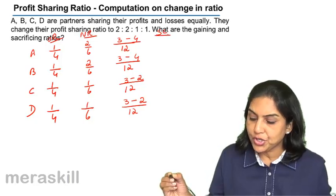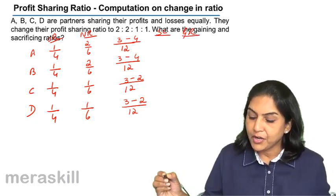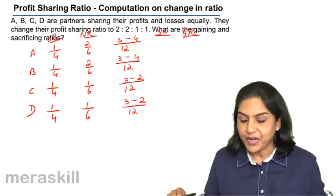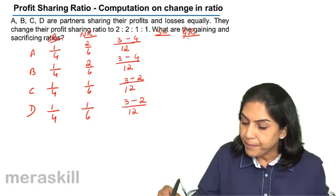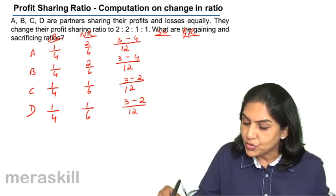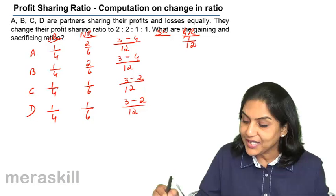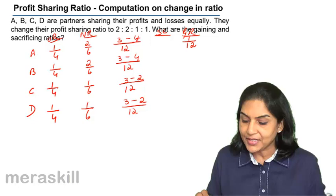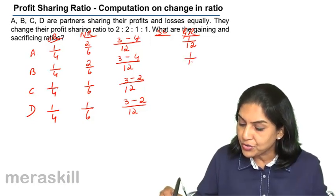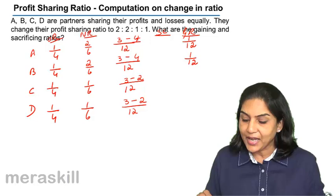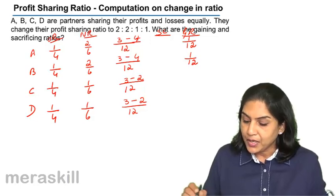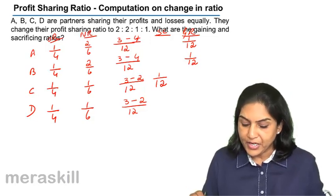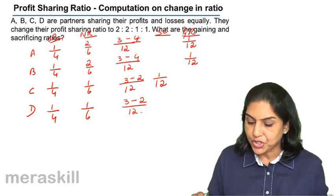Sacrificing ratio and a gaining ratio. If old ratio was more, then there is a sacrificing ratio. Here 3 minus 4, minus 1 by 12. So 1 by 12 must be the gaining ratio because the new ratio is greater. So also here, new ratio is greater. Therefore, this is the gaining ratio. But in case of C, 1 by 12, that is the sacrificing ratio.